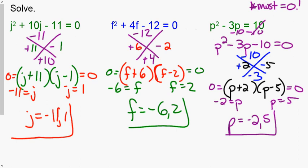For the j problem: the top number is negative 11, which is prime, so it must be 1 and 11. Checking: 11 minus 1 equals positive 10, so the factors are (j + 11)(j − 1). Setting each equal to zero and solving, you get j = −11 and j = 1.